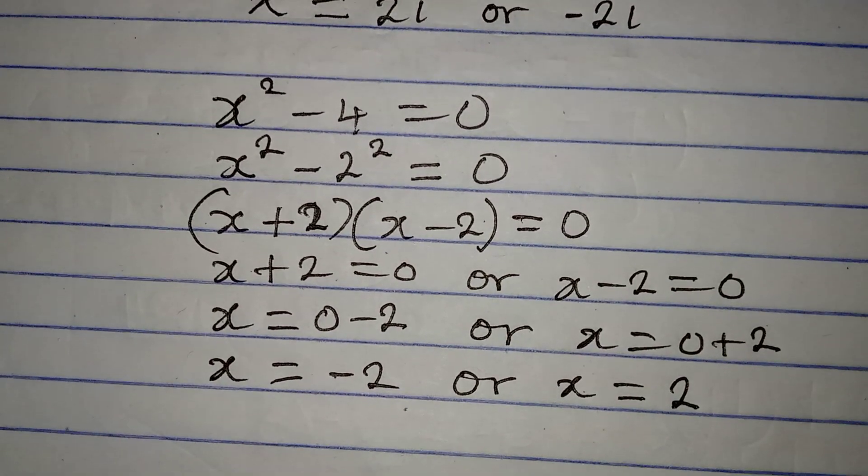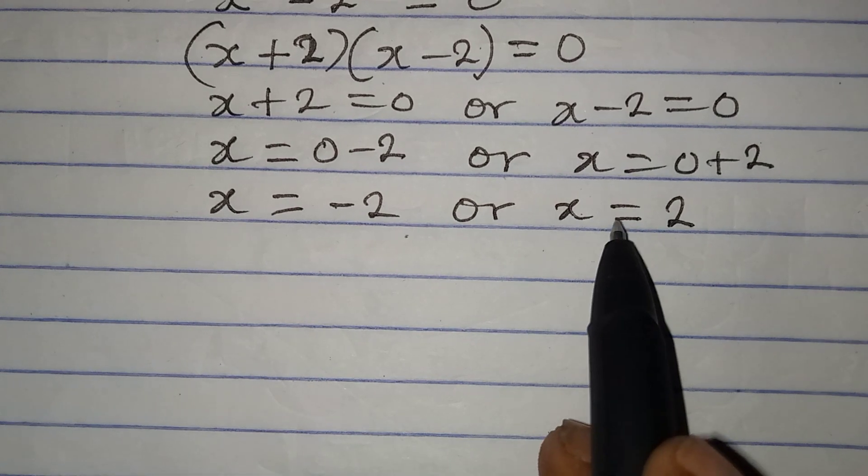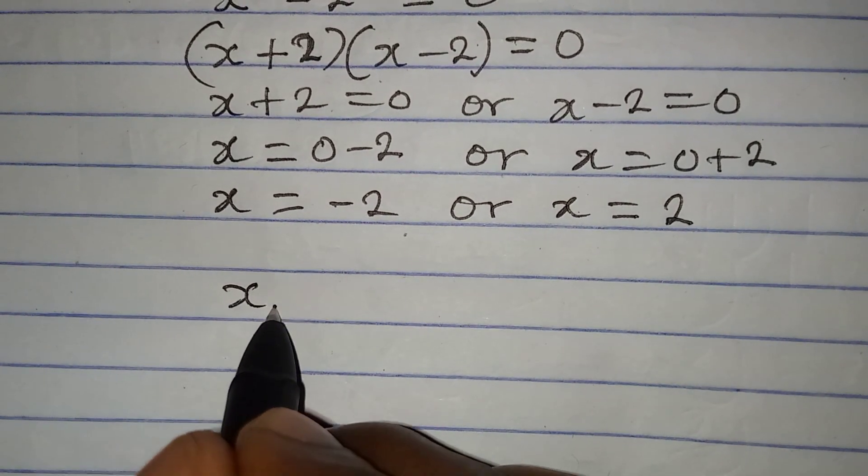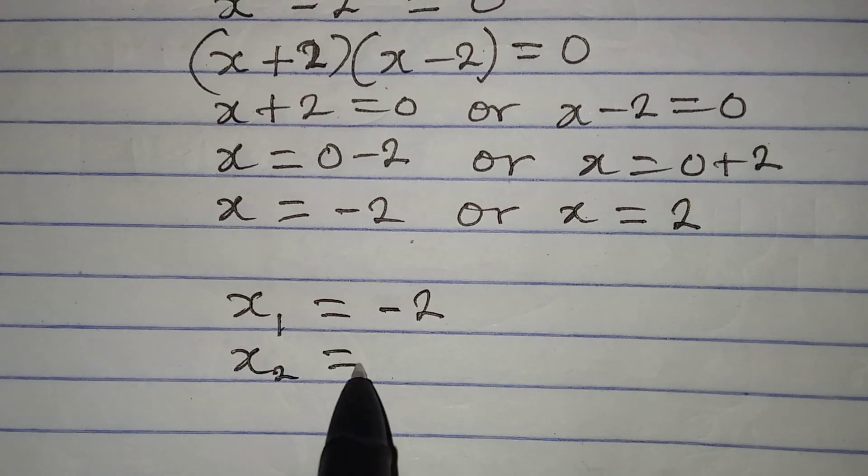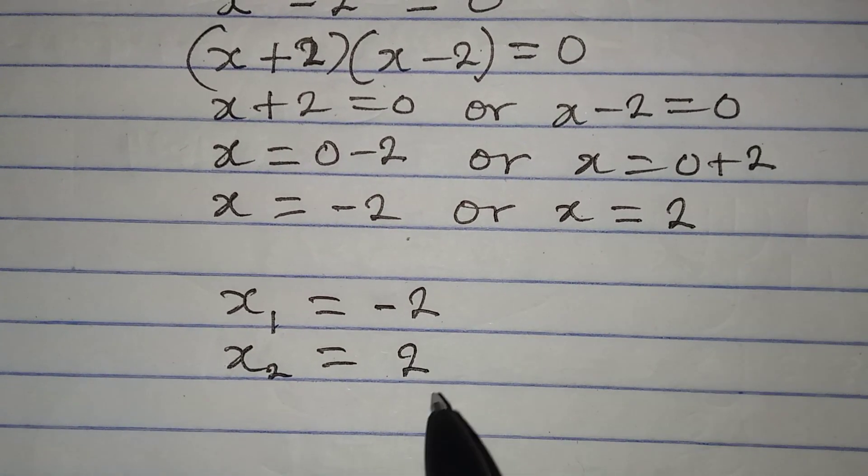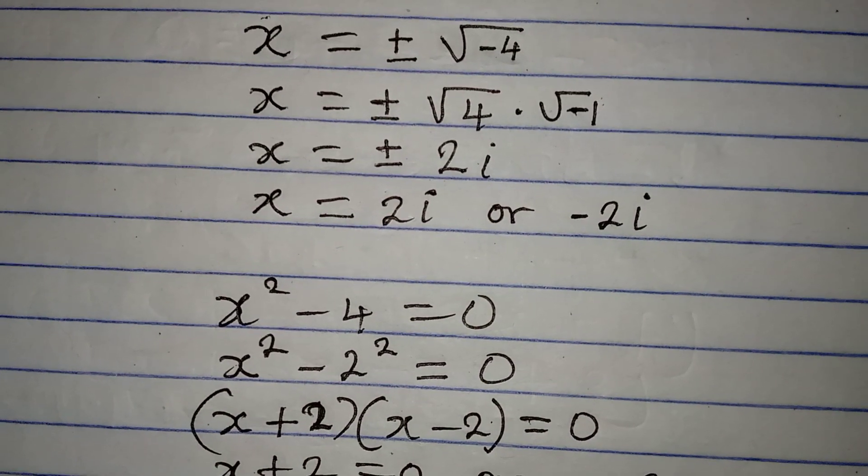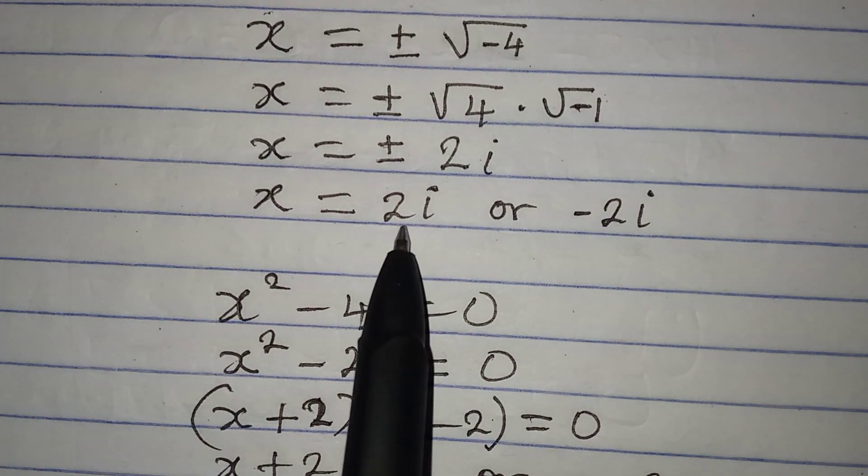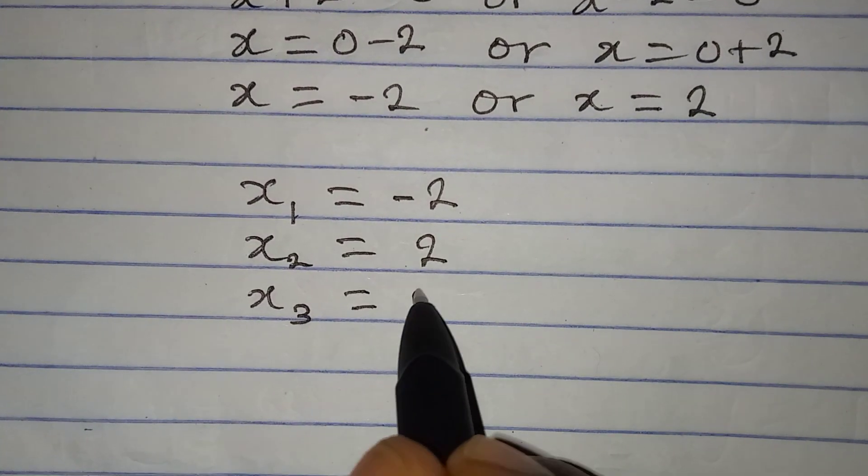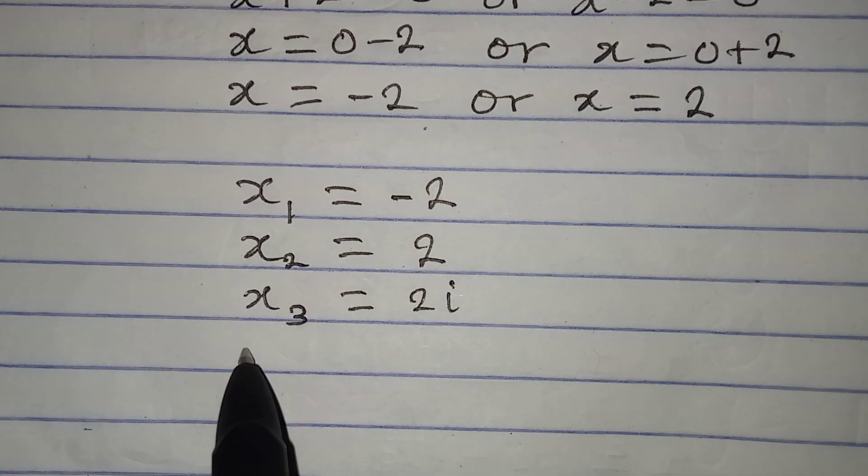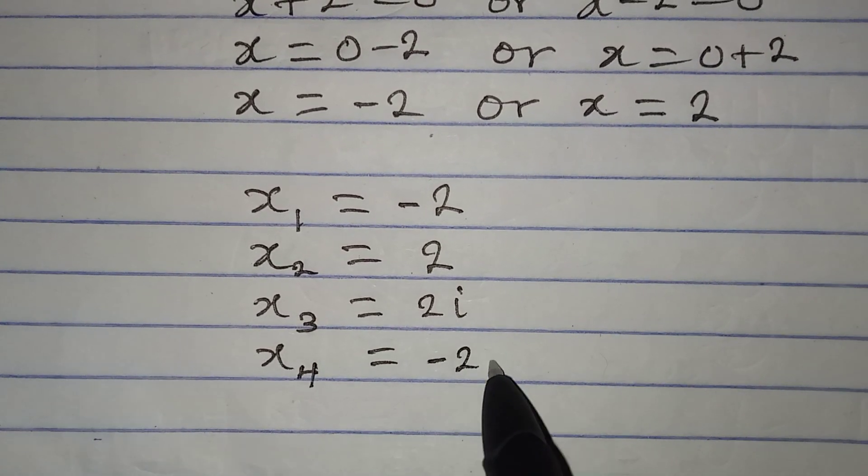Now let's bring all the solutions together. I'm going to call this x1, x2. So our x1 now is minus 2, our x2 is plus 2, then our x3 is from what we got before. So our x3 is 2i, and then our x4 will be negative 2i.